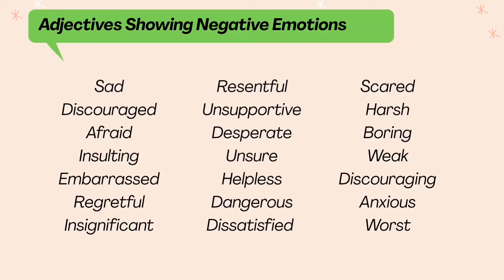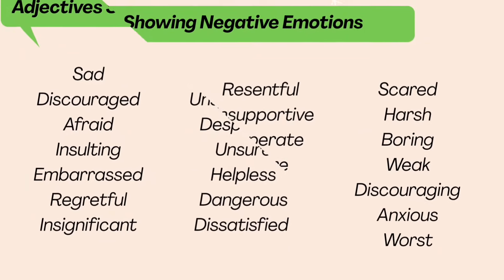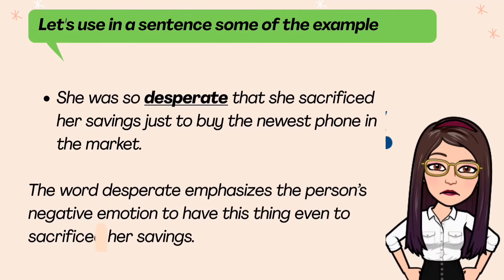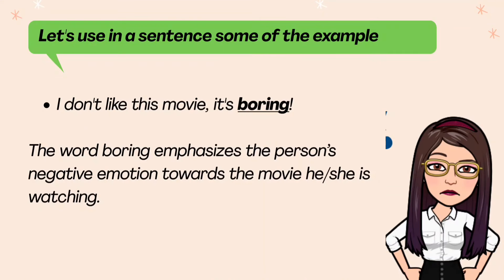Now, let's move on to adjectives that show negative emotions. Let's use some in a sentence. 'She was so desperate that she sacrificed her savings just to buy the newest phone in the market.' The word 'desperate' emphasizes the person's negative emotions to have this thing even to sacrifice her savings. Another example: 'I don't like this movie. It's boring.' The word 'boring' emphasizes the person's negative emotion towards the movie he or she is watching.